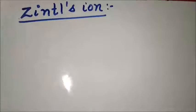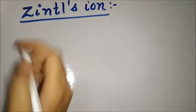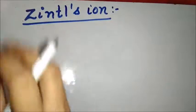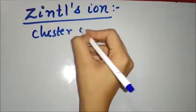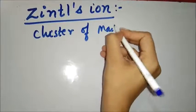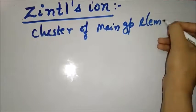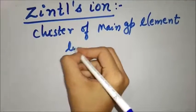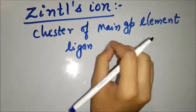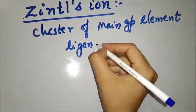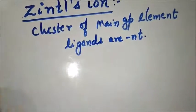The next topic under Wade nomenclature is Zintl ions. Zintl ions are clusters of main group elements where ligands are absent. In this type of structure, ligands are not present.